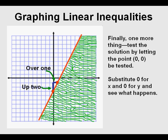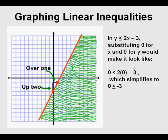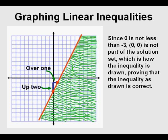Finally, we test the solution by letting the point (0, 0) be tested. We substitute 0 for x and 0 for y. We get 0 is less than or equal to negative 3. Since 0 is not less than or equal to negative 3, (0, 0) is not part of the solution set — which is consistent with how the inequality was drawn, because the origin is not in the shaded area. So the inequality is correctly graphed.